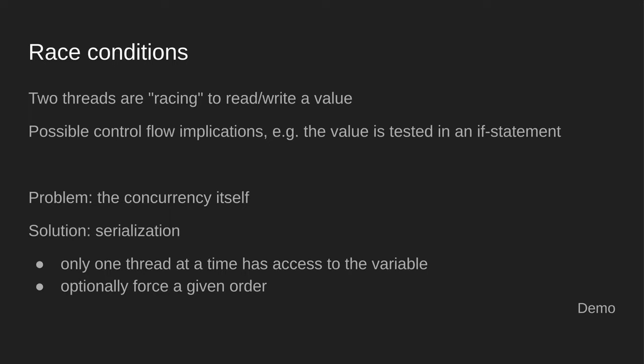Let's talk about race conditions. Two threads are racing to read or write a value, and this has possible control flow implications. For instance, if you have one thread modifying a variable and another thread reading that variable, it depends on the order. If the write happens before the read, you might get a different result in the if statement — it might take a different path.